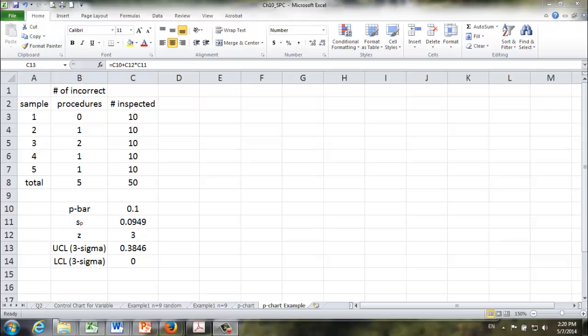In the end, we get lower control limit 0%, upper control limit 38.46%. That means we are 99.73% confident that the actual defective ratio will be between 0 and 38.46%.